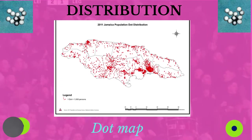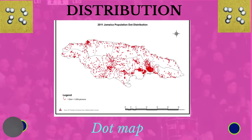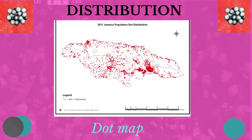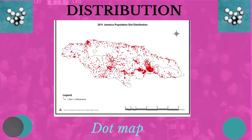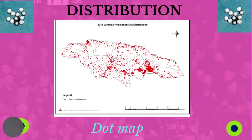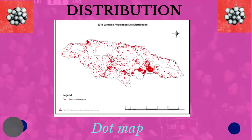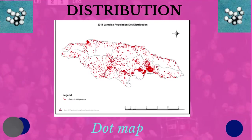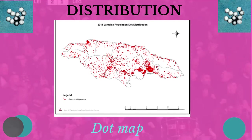Let's first look at population distribution. Population distribution is the spread of people over a particular area, or it is where people live and where they do not live. Where people live over a particular area can create a pattern. This pattern is usually uneven, with some places having many persons while other places have few or no persons.